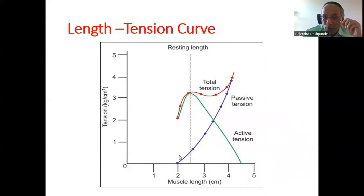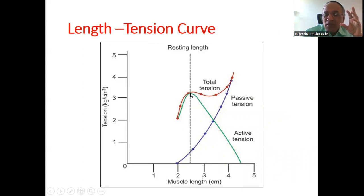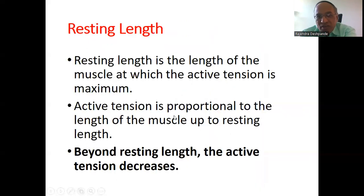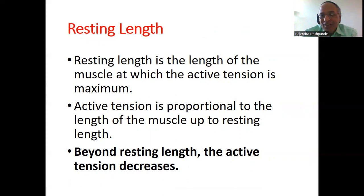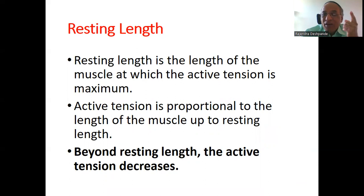This graph may look complicated but it is not. Here you can see resting length on the x-axis representing muscle length, and tension on the y-axis. At a particular length, the tension will be maximum — this is the resting length. Beyond that length, tension drops down. The definition of resting length is: the length of the muscle at which active tension is maximum. Active tension is proportional to the length of the muscle up to the resting length; beyond resting length, the active tension decreases. This is important for MCQs.